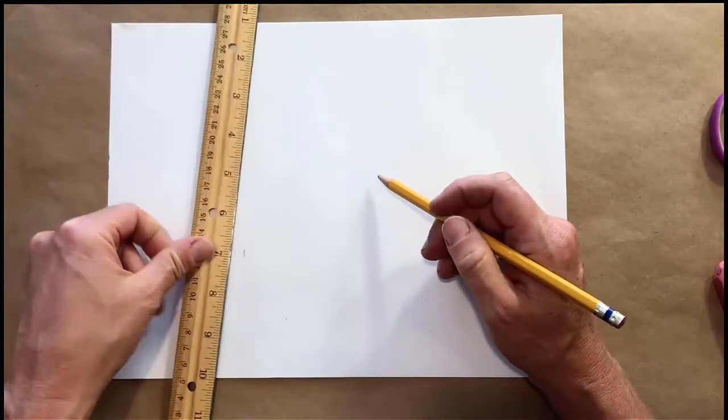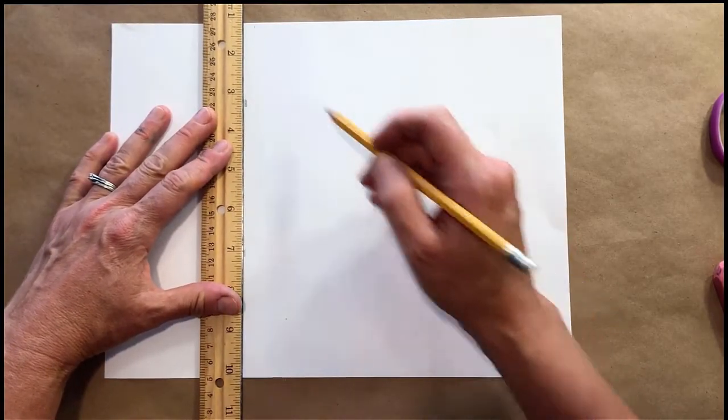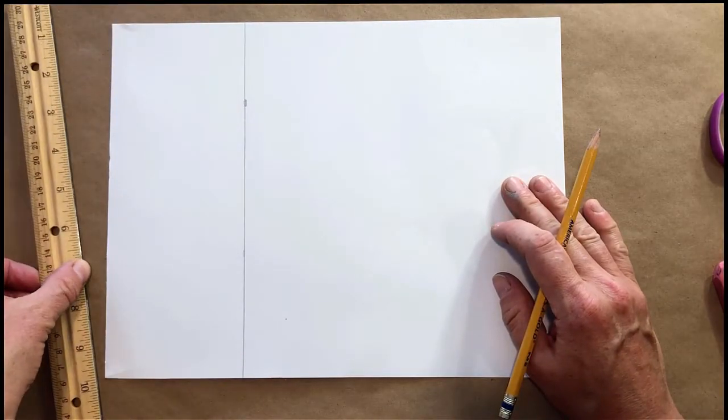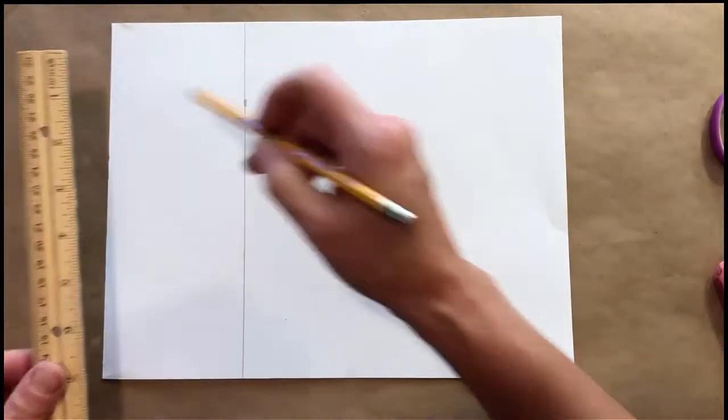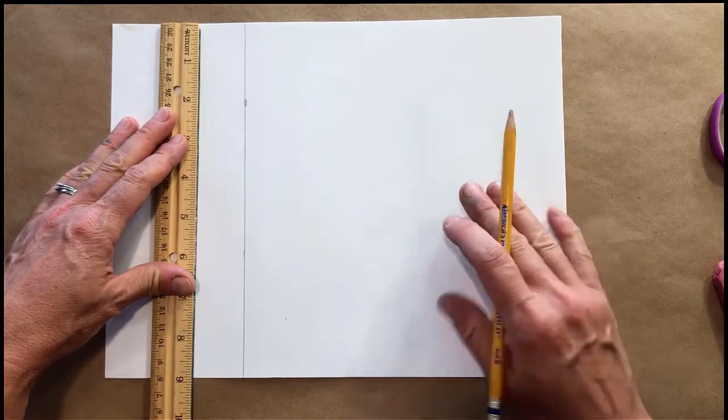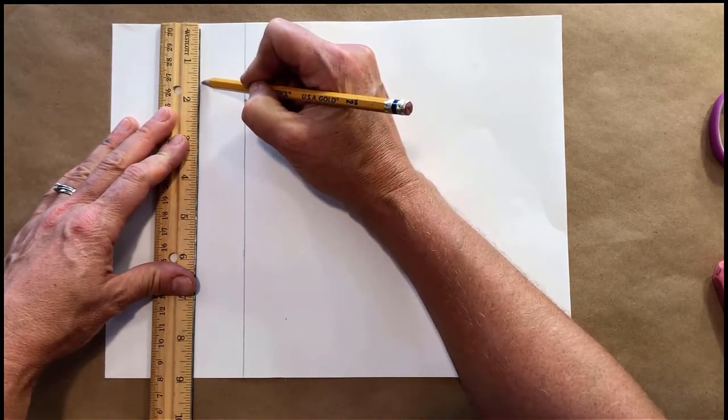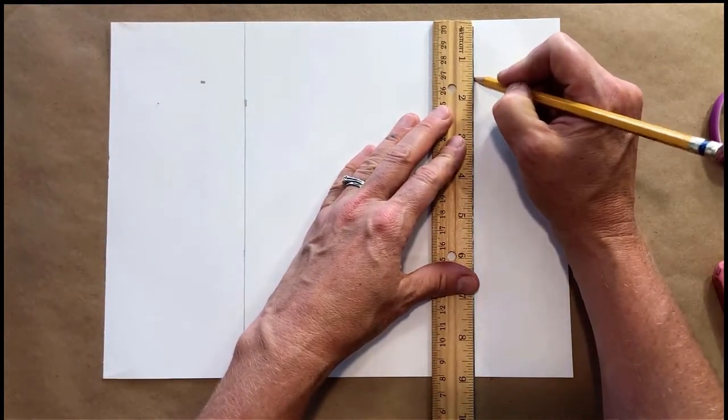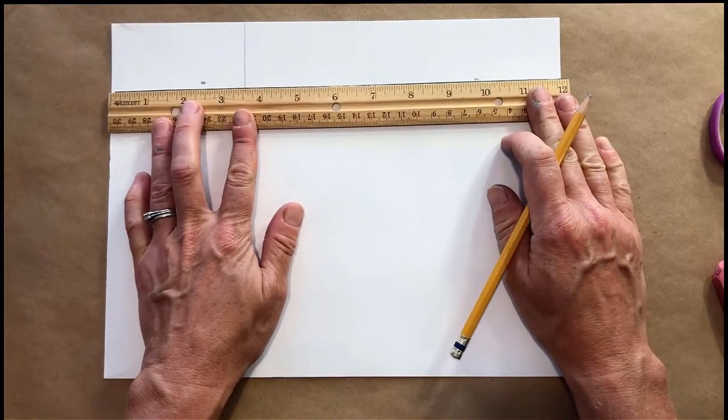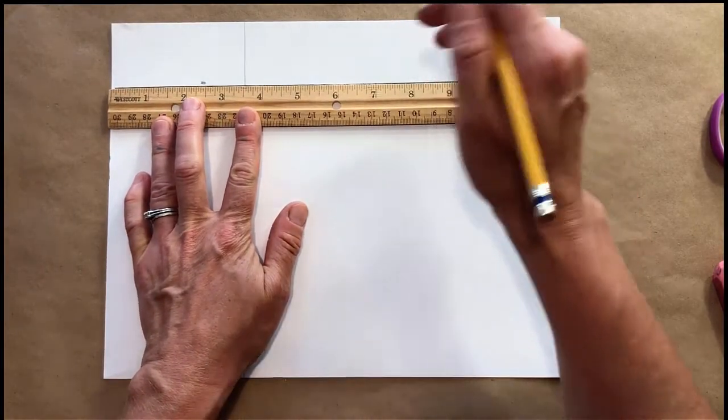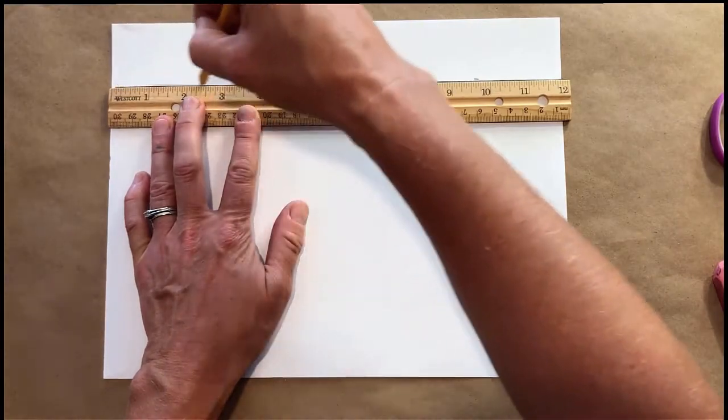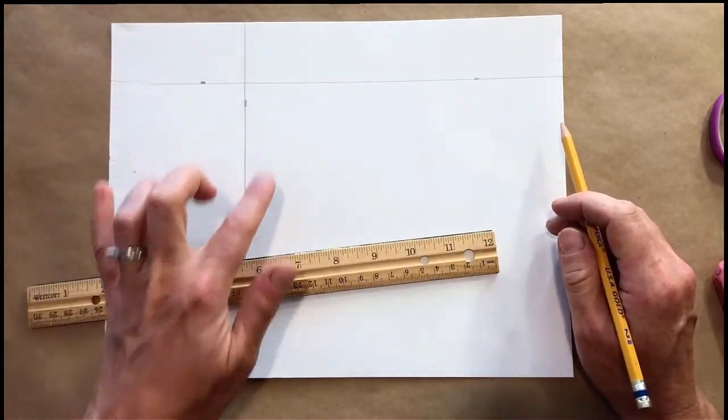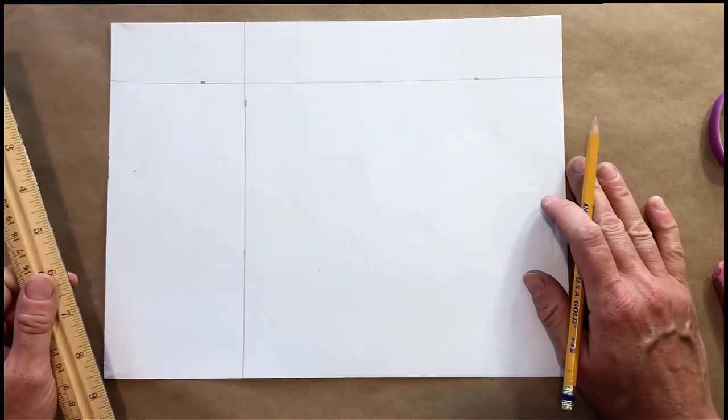Now that you have those two marks, use your straight edge and we're going to connect those dots. Now we're going to do a line going this way. Line your ruler up with the top of the paper and make a mark at one and a half inches down. Scoot your ruler over and make another mark at one and a half inches down. Now use your straight edge and connect those two dots again. You should have a line up top and a line like this.